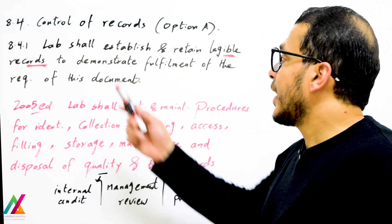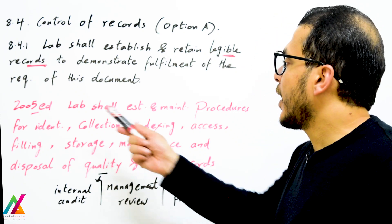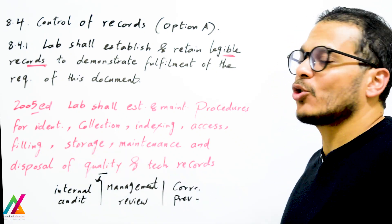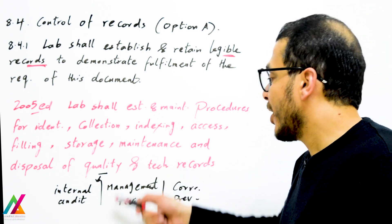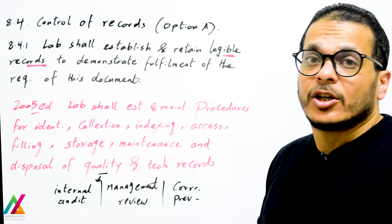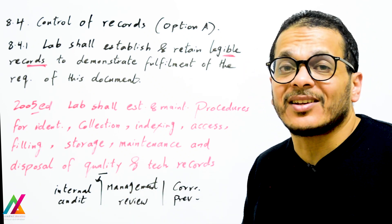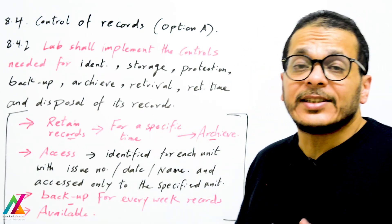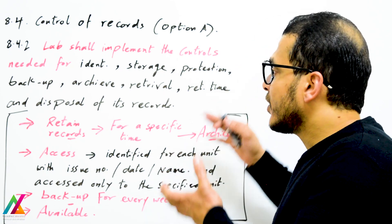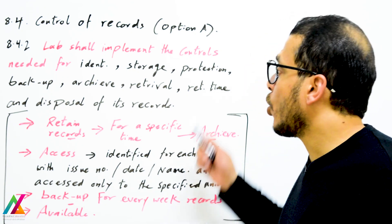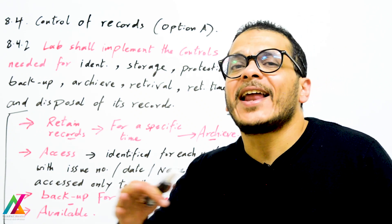The first requirement is that the lab shall establish and retain legible records to demonstrate fulfillment of the requirements. In the 2005 edition, the lab was required to establish and maintain procedures for identification, collection, indexing, access, filing, storage, maintenance, and disposal of quality and technical records. In 2017, this is more flexible — there is no mandatory requirement to prepare a specific procedure for retaining records.